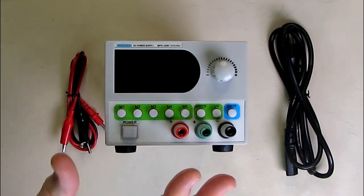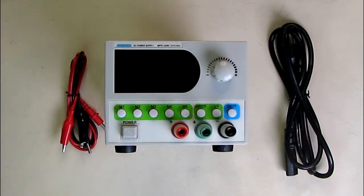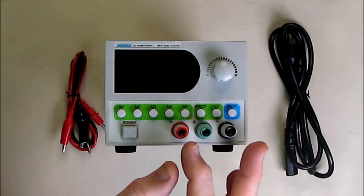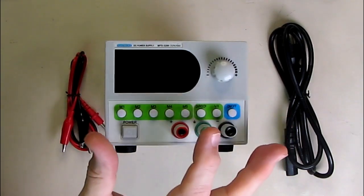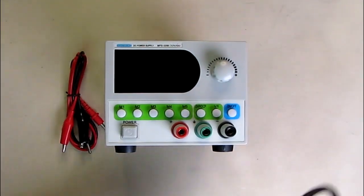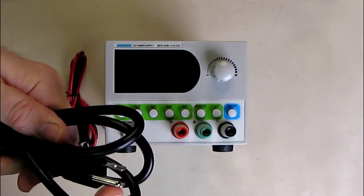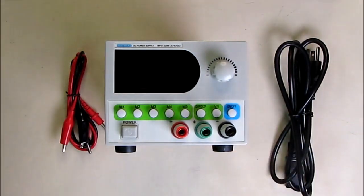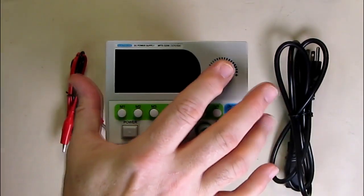You can see it has three terminals here: plus, minus, and earth ground. That ground is essentially the same as the earth ground on the US plug. There's also a button right here we're going to figure out what that's for.